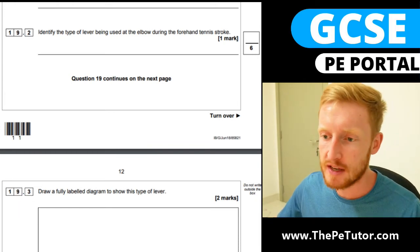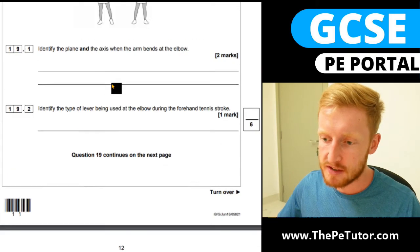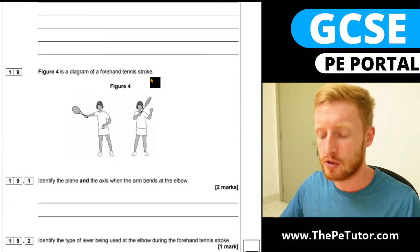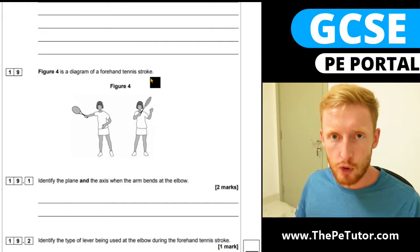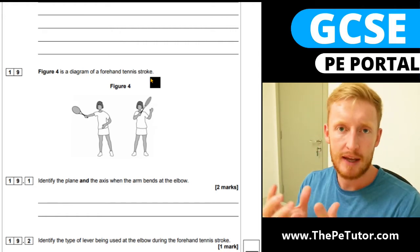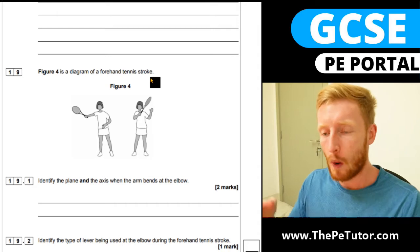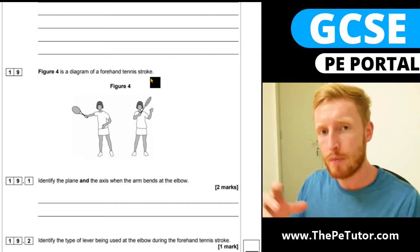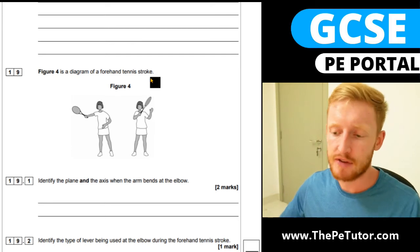And what it's asking us is to identify the type of lever from this image up here. Now this could be from any sporting context but you need to be able to analyze a movement, work out what joint is moving and articulating, what muscles and agonists and antagonists are in action and then from that you'll be able to work out the lever system in play.